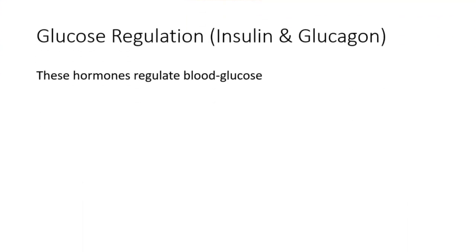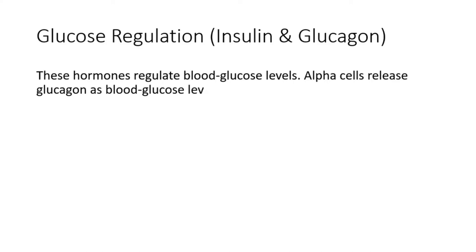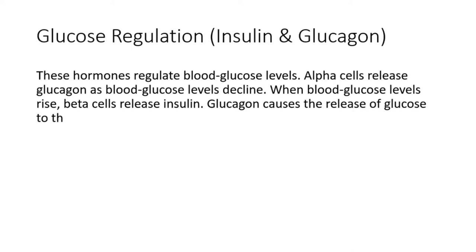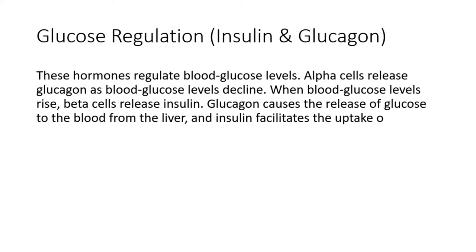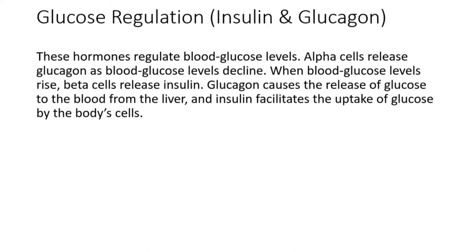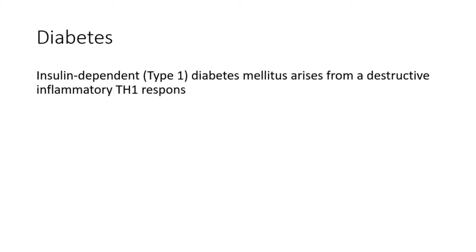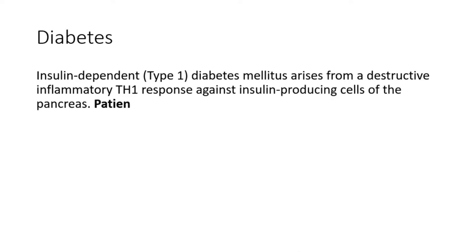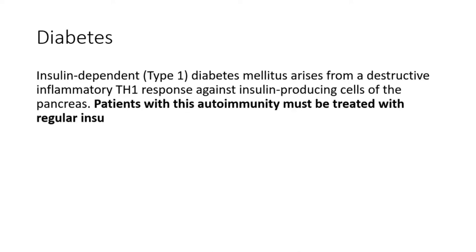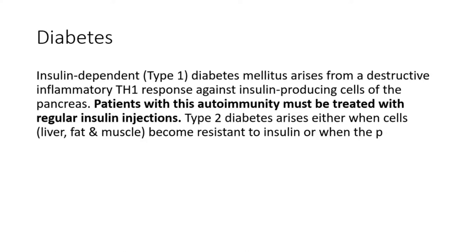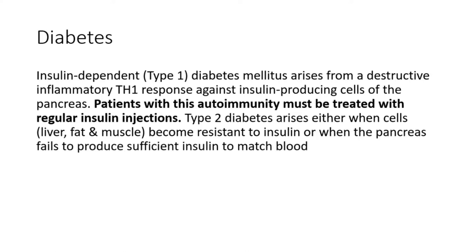Glucose regulation: insulin and glucagon. These hormones regulate blood glucose levels. Alpha cells release glucagon as blood glucose levels decline. When blood glucose levels rise, beta cells release insulin. Glucagon causes the release of glucose to the blood from the liver, and insulin facilitates the uptake of glucose by the body's cells. Insulin-dependent Type 1 diabetes mellitus arises from a destructive inflammatory Th1 response against insulin-producing cells of the pancreas. Patients with this autoimmunity must be treated with regular insulin injections. Type 2 diabetes arises either when cells — liver, fat, and muscle — become resistant to insulin, or when the pancreas fails to produce sufficient insulin to match blood glucose levels.